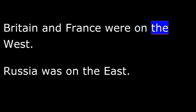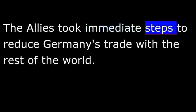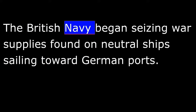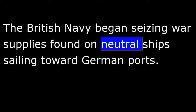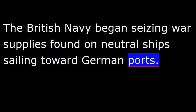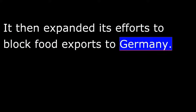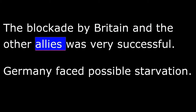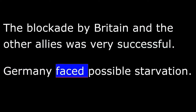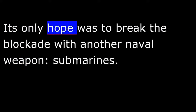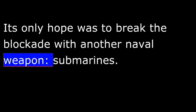Britain was on the west and Russia on the east. The Allies took immediate steps to reduce Germany's trade with the rest of the world. The British Navy began seizing war supplies found on neutral ships sailing toward German ports, then expanded its efforts to block food exports to Germany. The blockade was very successful. Germany faced possible starvation, and its navy was not strong enough to break the blockade with surface ships. Its only hope was submarines.